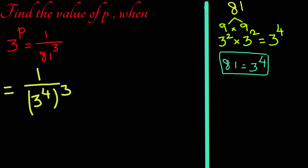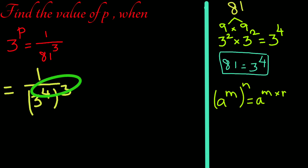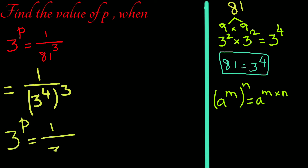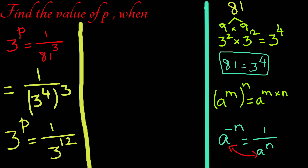Power of power — let's multiply both the powers. We have 3 to the power p equal to 1 over 3 to the power 12. Let us convert the denominator value to the numerator. We have 3 to the power p equal to 3 to the power negative 12.